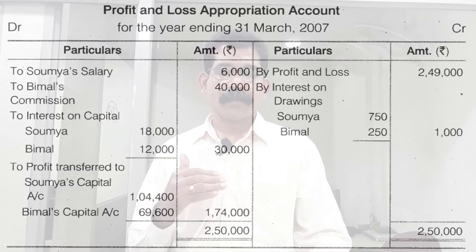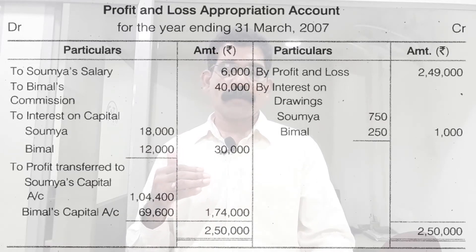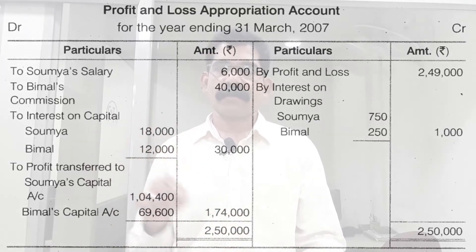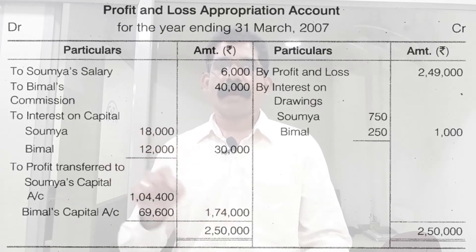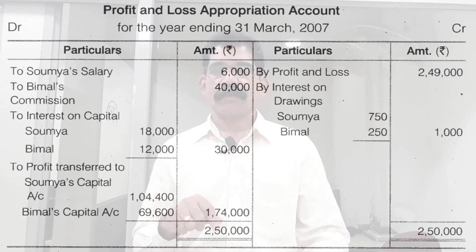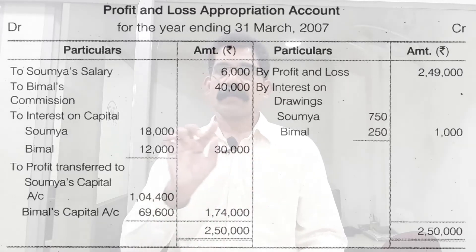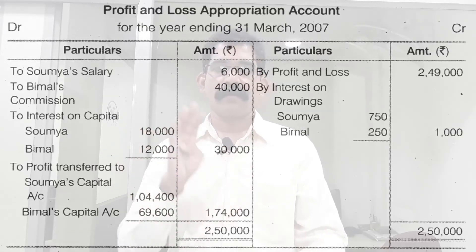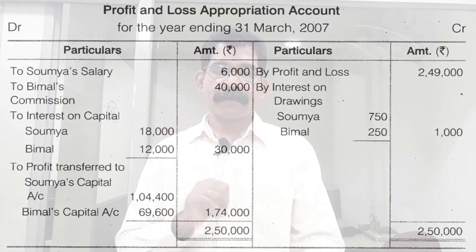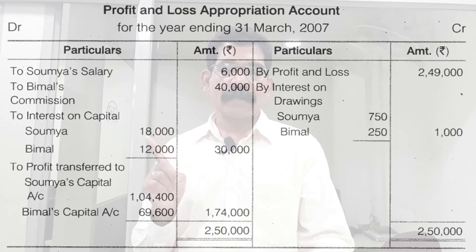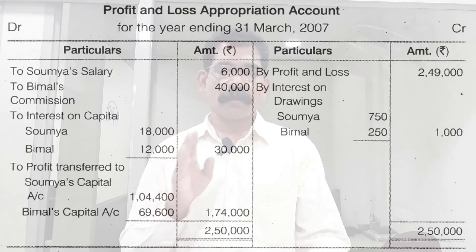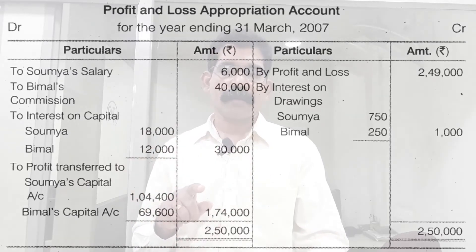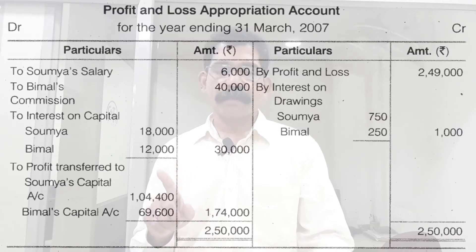Coming to the debit side — the first item is salary. Soumya is eligible to get a salary of Rs. 500 per month, so the total salary for the year comes to Rs. 6,000. The next debit will be commission: Bimel is to get a commission of Rs. 40,000. Then interest on capital is to be credited at 6% per annum.